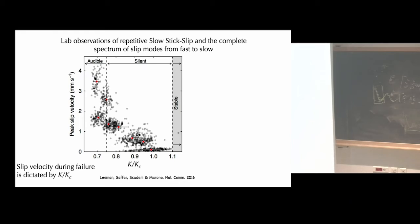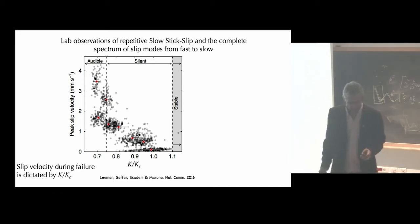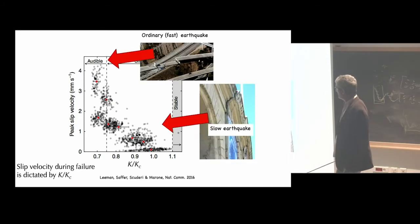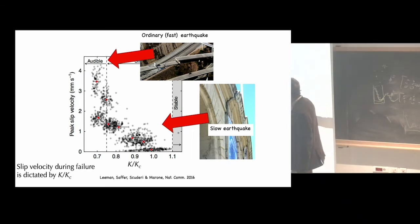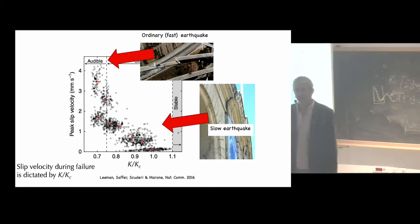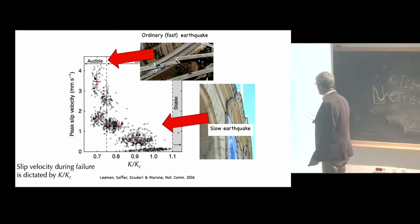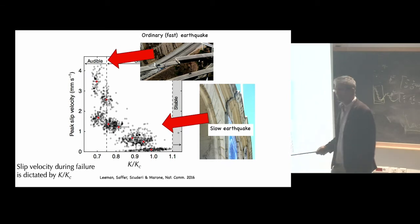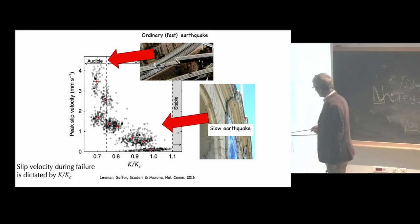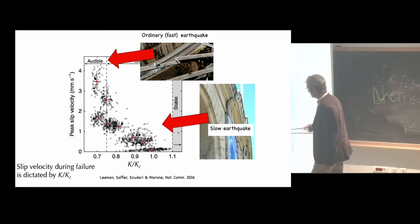These events in the slow regime are basically silent — there's hardly any acoustic energy — through to audible events. This is in millimeters per second. We were focused on the transition between slow and fast events. These represent slow earthquakes, these represent fast earthquakes, ordinary earthquakes. If you've ever been to Berkeley, California, there's their American football stadium built right on the Hayward Fault, being offset by creep along the Hayward Fault — an example of slow slip in nature.